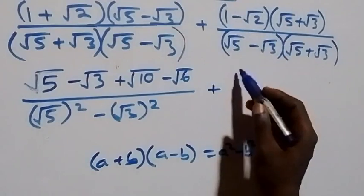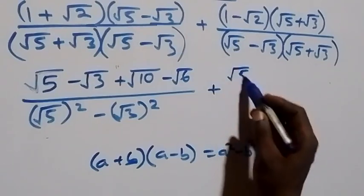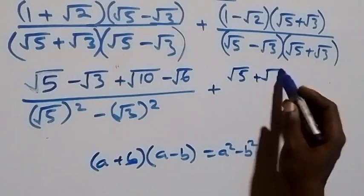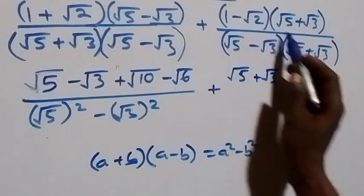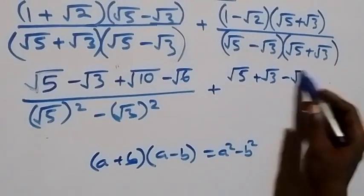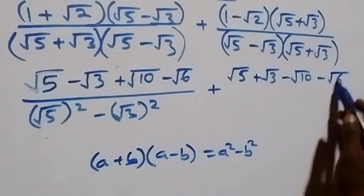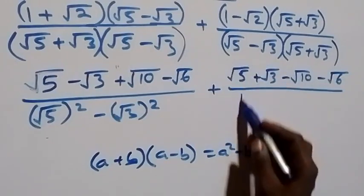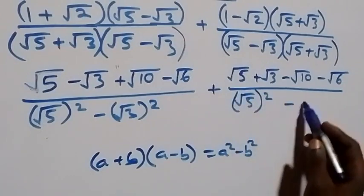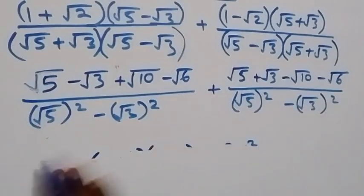Expanding the second numerator: 1 × √5 = √5, then plus √3, then −√2 × √5 = −√10, and the denominator again gives √5² − √3².